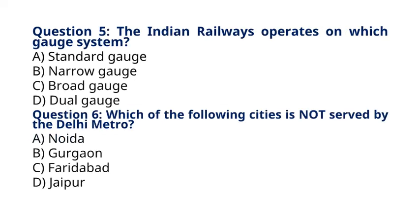Question 5: The Indian Railways operates on which gauge system? A. Standard gauge, B. Narrow gauge, C. Broad gauge, D. Dual gauge. The correct answer to question 5 is option C, Broad gauge. The majority of the Indian Railways network operates on the broad gauge system.